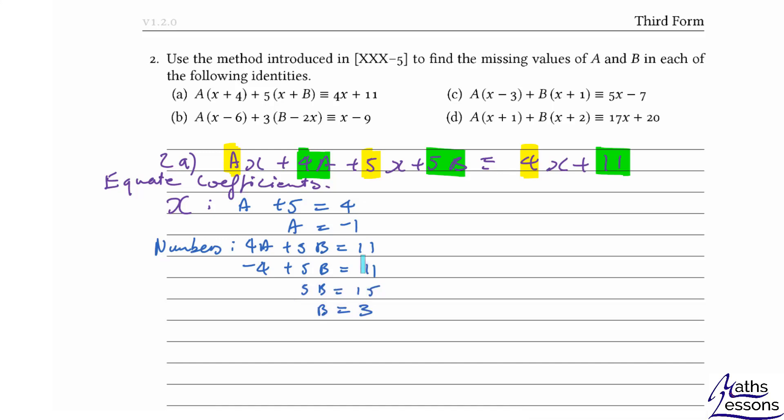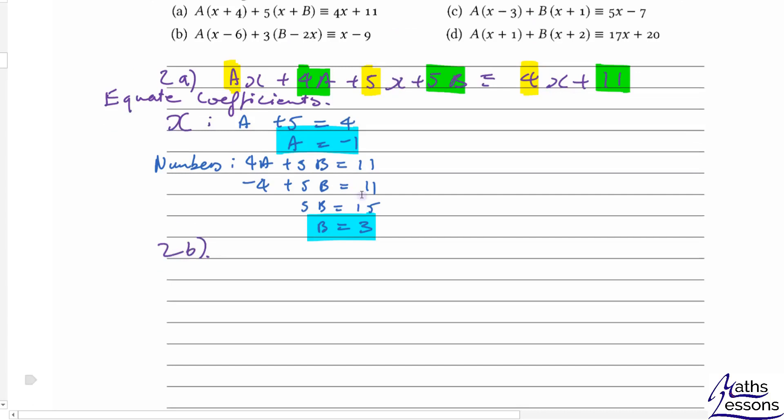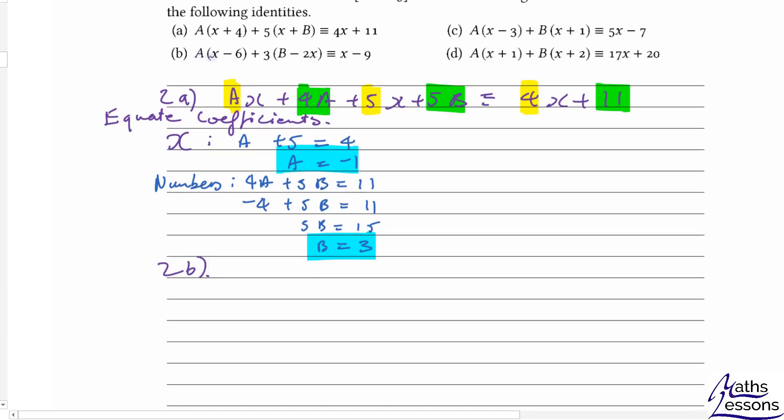So there's our two answers for a and b. Let's look at 2b next. We're going to multiply out the brackets again: ax minus 6a plus 3b minus 6x is equivalent to x minus 9.